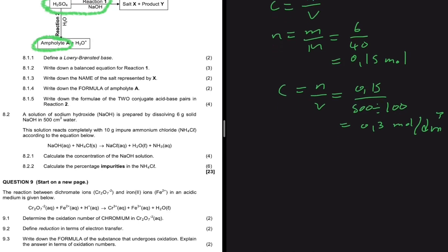Question 8.2.2 asks to calculate the percentage impurity in the NH₄Cl sample. Percentage purity plus percentage impurity equals 100, so we can find percentage purity and subtract from 100. To find percentage purity we need the mass of the pure substance. The total mass is 10 grams; we need to find the mass of pure NH₄Cl that actually reacted.